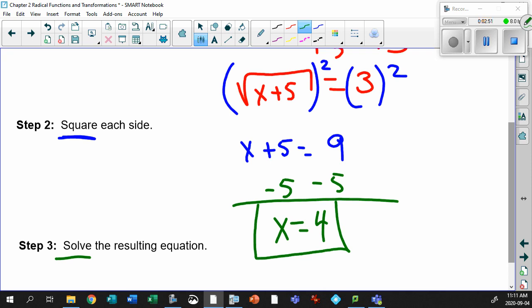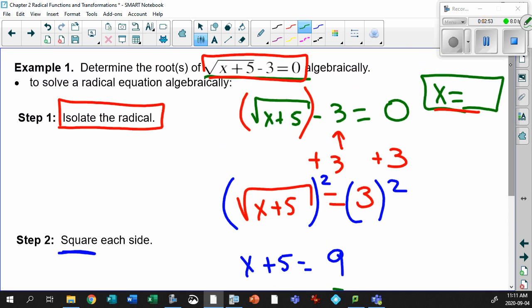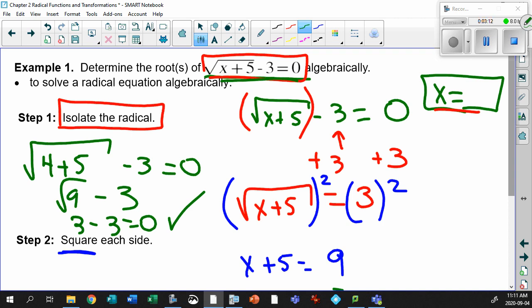4 works. If you don't believe me, take 4 and put it back in the original. See if it gives you 0. Well, simple. Watch this. The square root, x value I said was 4. 4 plus 5 minus 3. Better equal to 0. 4 plus 5 is 9. Minus 3. Square root of 9 is 3. 3 minus 3 equals to 0. Hey, it worked.